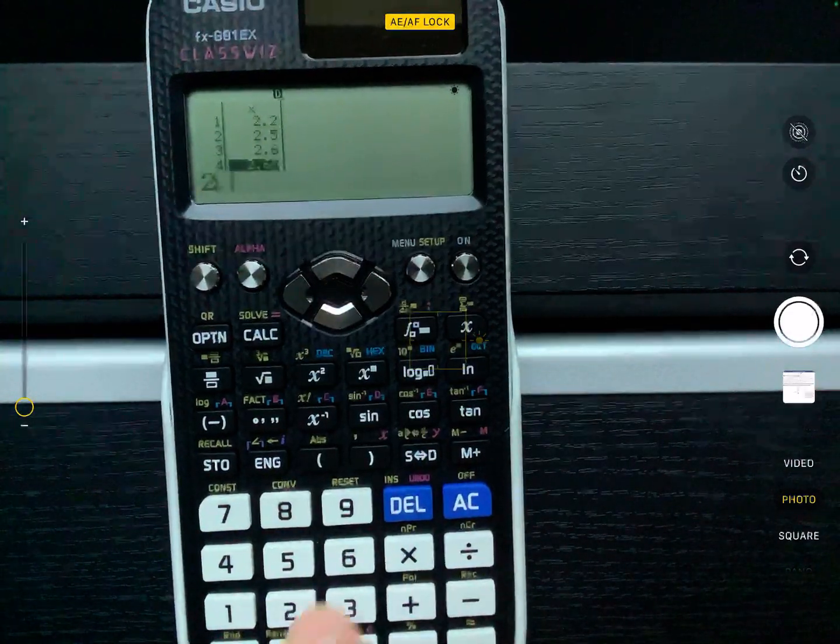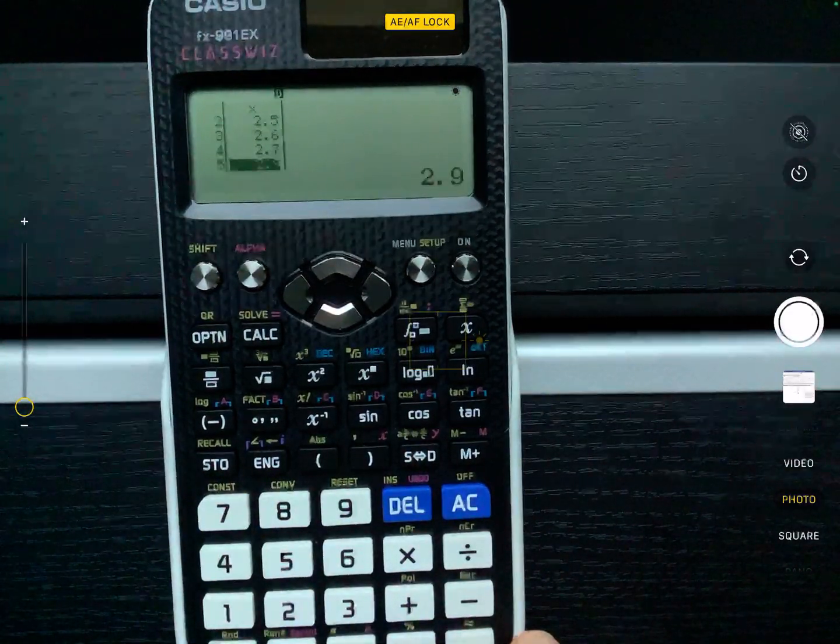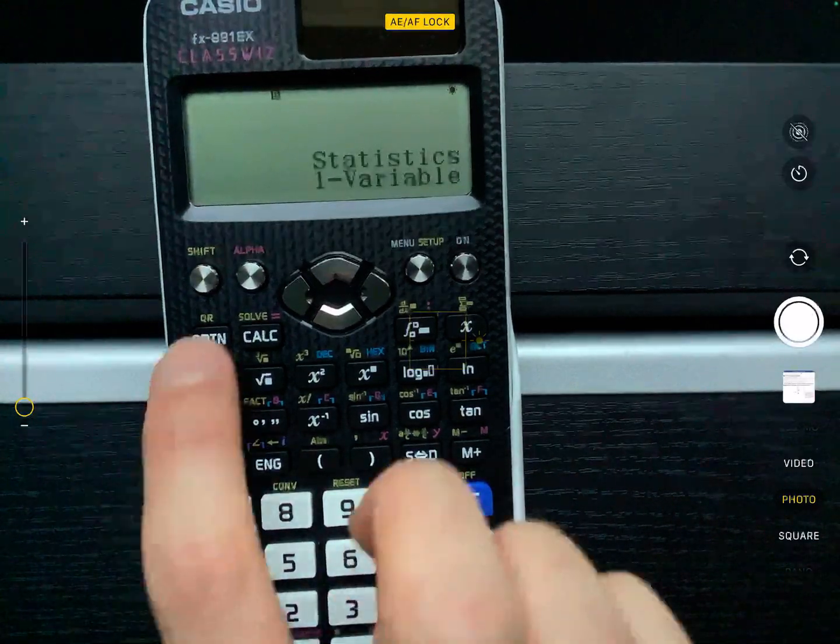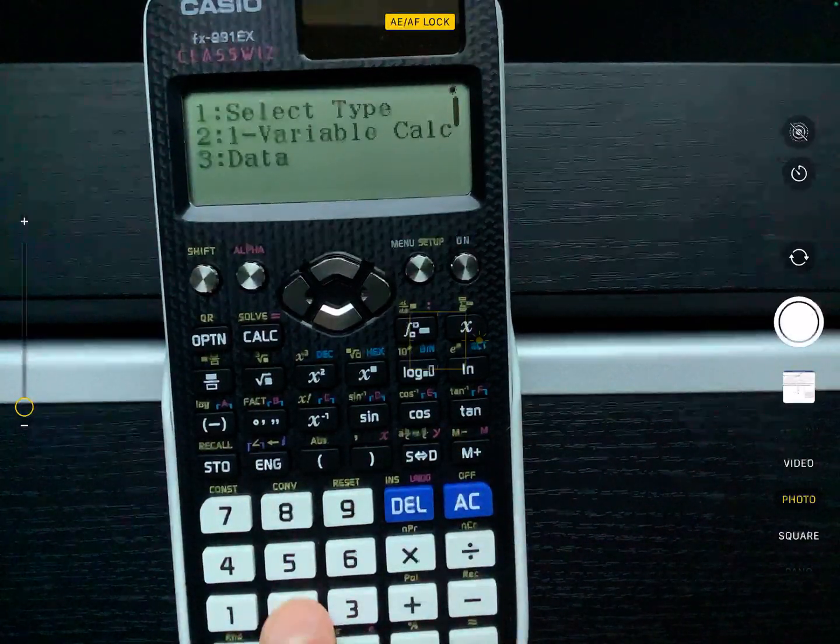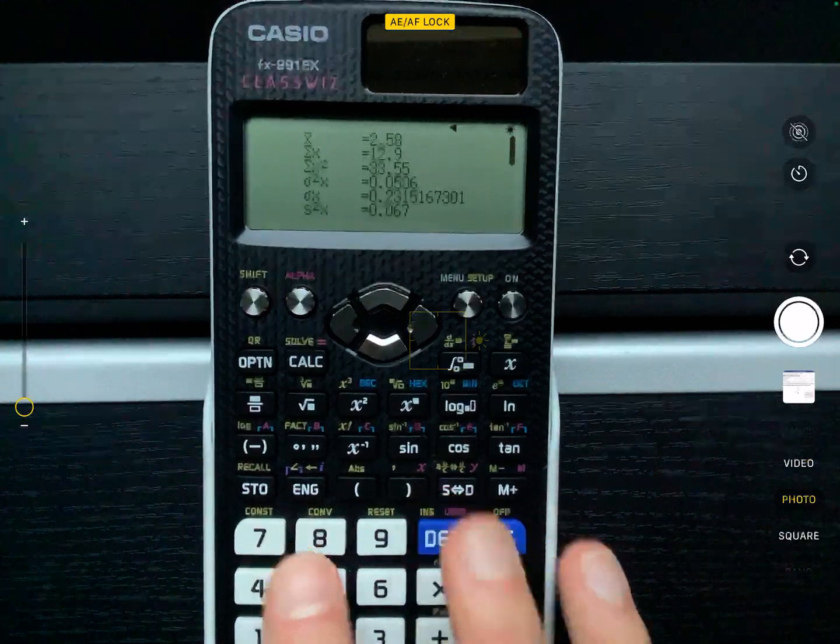And then you can go back to the data and you can say, oh, hang on. That wasn't meant to be 2.65. That was meant to be 2.7 and then press the AC button again and you can see how it changes any of your calculations that you've got there.